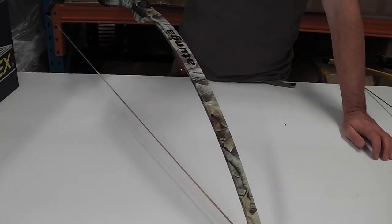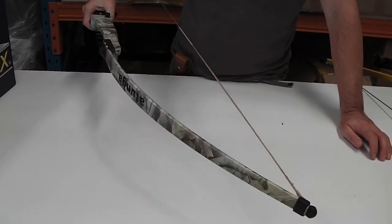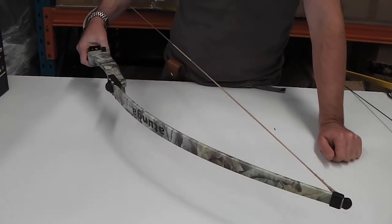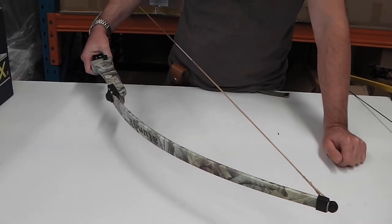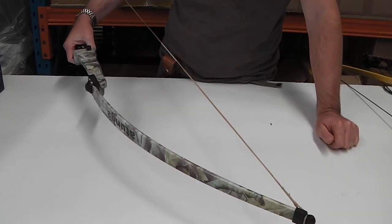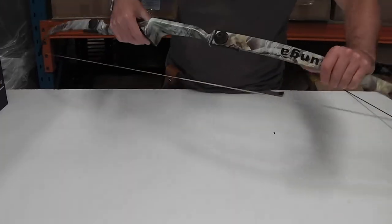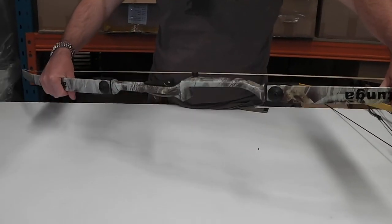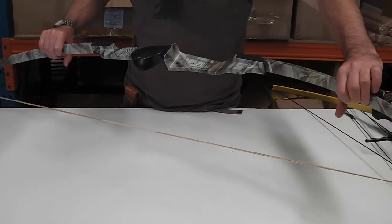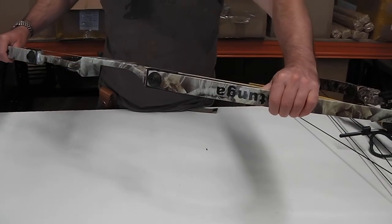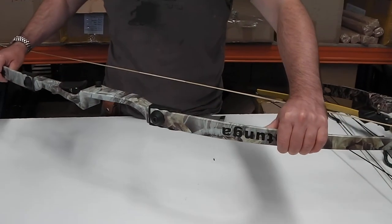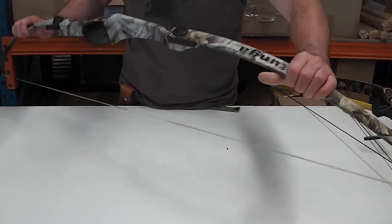They're all the same size—145 centimeters when strung—and they all look the same. The string is the same length and type, and the riser is the same on all three models. The only difference is the thickness of the fiberglass, which changes the flex to give you the three different poundages.